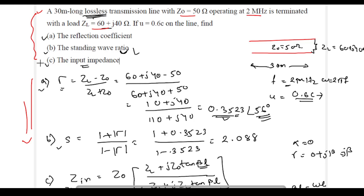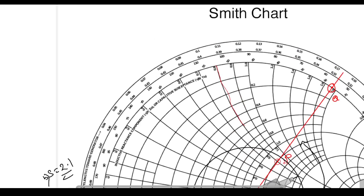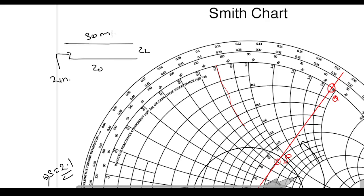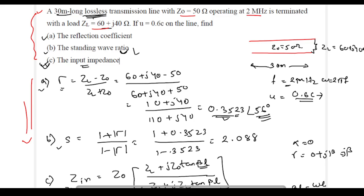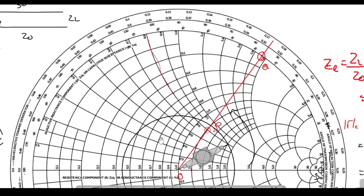Next we have to find the input impedance. In the question, a transmission line is given with ZL, Z0, and length 30 meters. Frequency is given as 2 MHz and velocity as 0.6c. We need to find lambda. The complete circle on the Smith Chart represents lambda/2, which equals 360 degrees, so lambda equals 720 degrees of rotation.